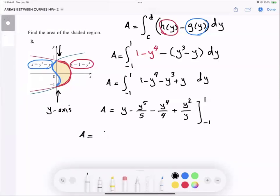So the area is equal to 1 minus 1/5 minus 1/4 plus 1/2, minus now plug in negative 1, you get negative 1 plus 1/5 minus 1/4 plus 1/2.